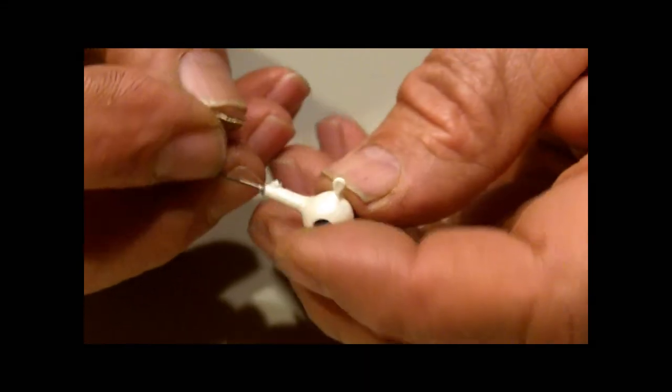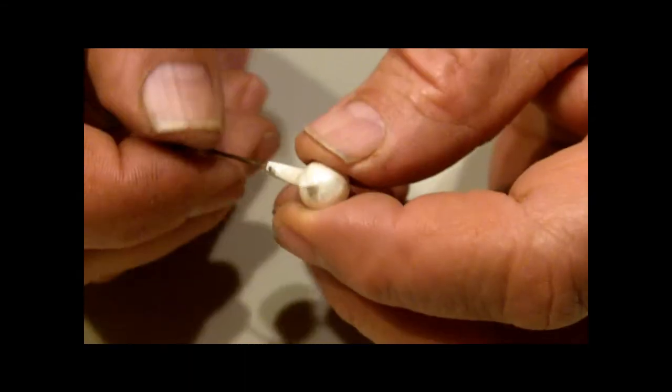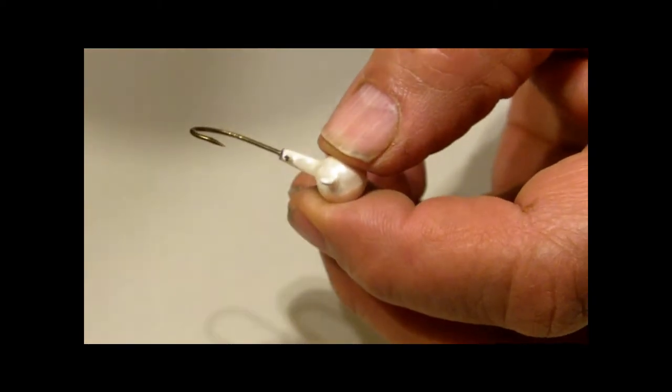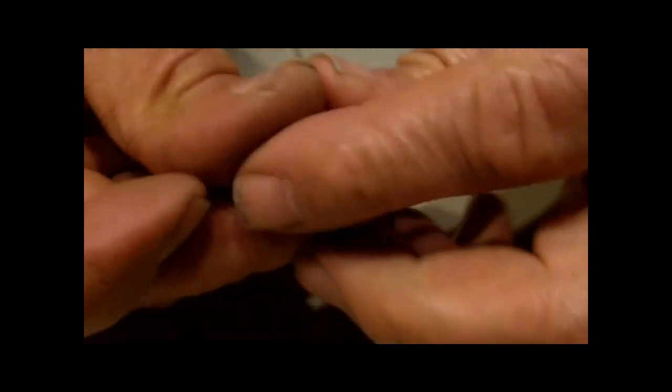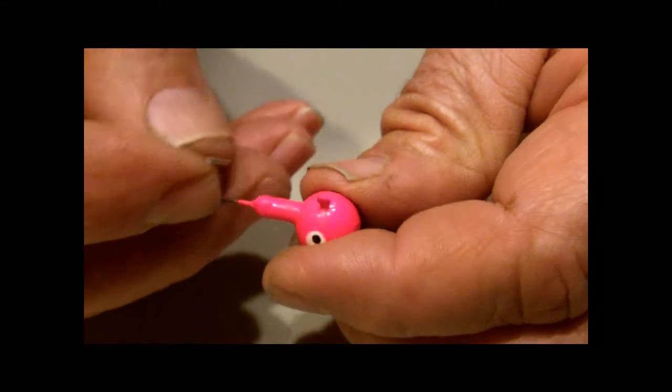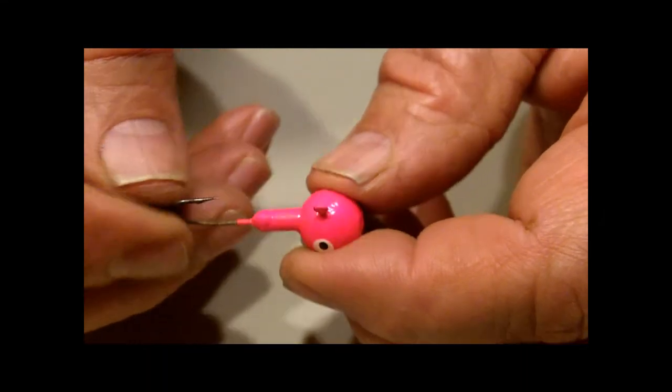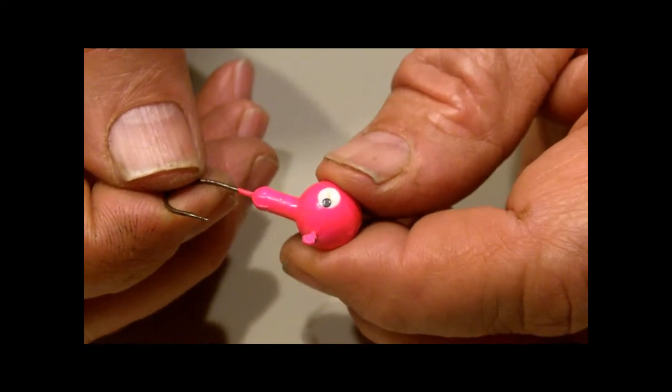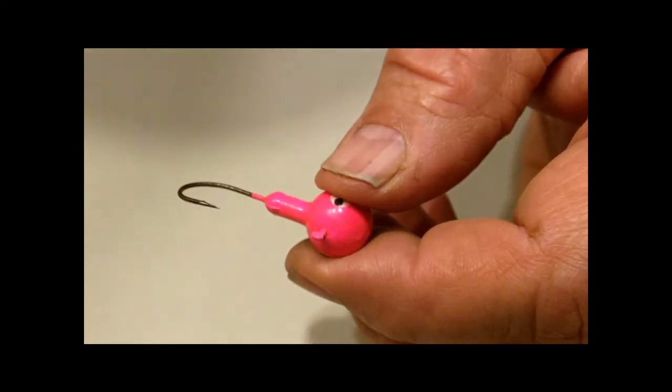Here's a quarter ounce jig. You can see the eye on that jig makes it extremely difficult to tie a knot. Here's a three-eighth ounce jig, bought at a local bait store, like every other jig you buy. See the tiny eye and standard jig hook, painted shut, hard to tie a Palomar knot.